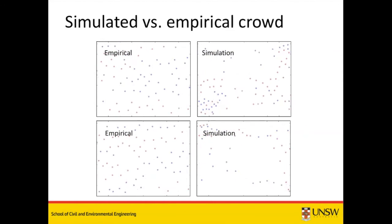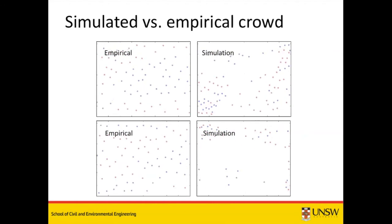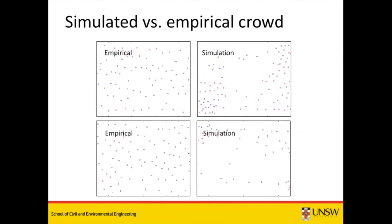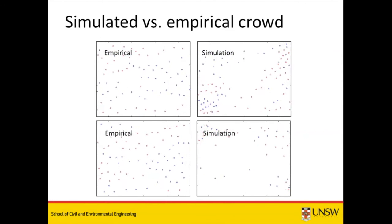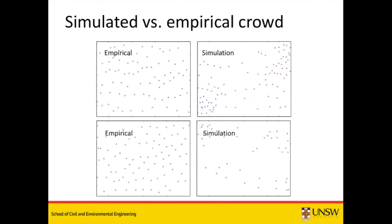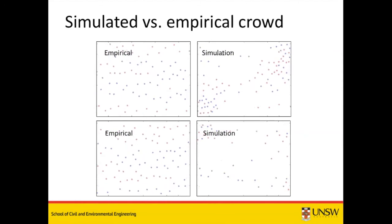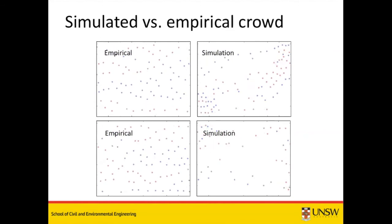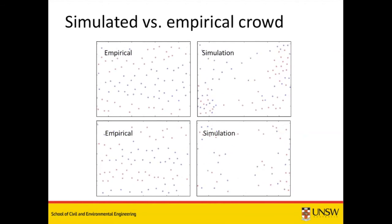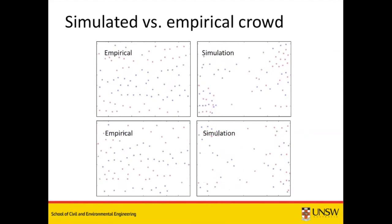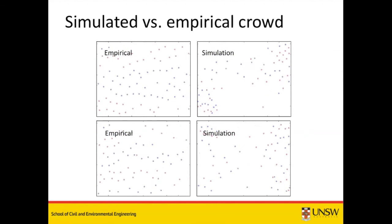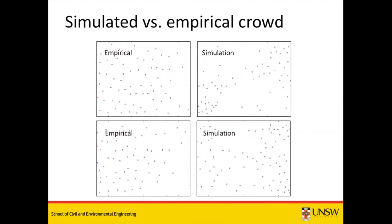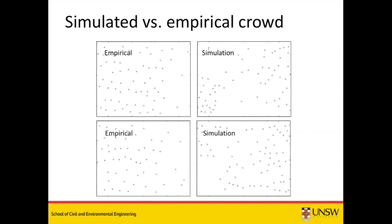Maybe adding more stochasticity — for example in the direction of movement, not just desired speed — would cause people to occupy the space more homogeneously and fill in that empty PMFD region. That's a good idea, actually, and something worth exploring as a future improvement to the model.